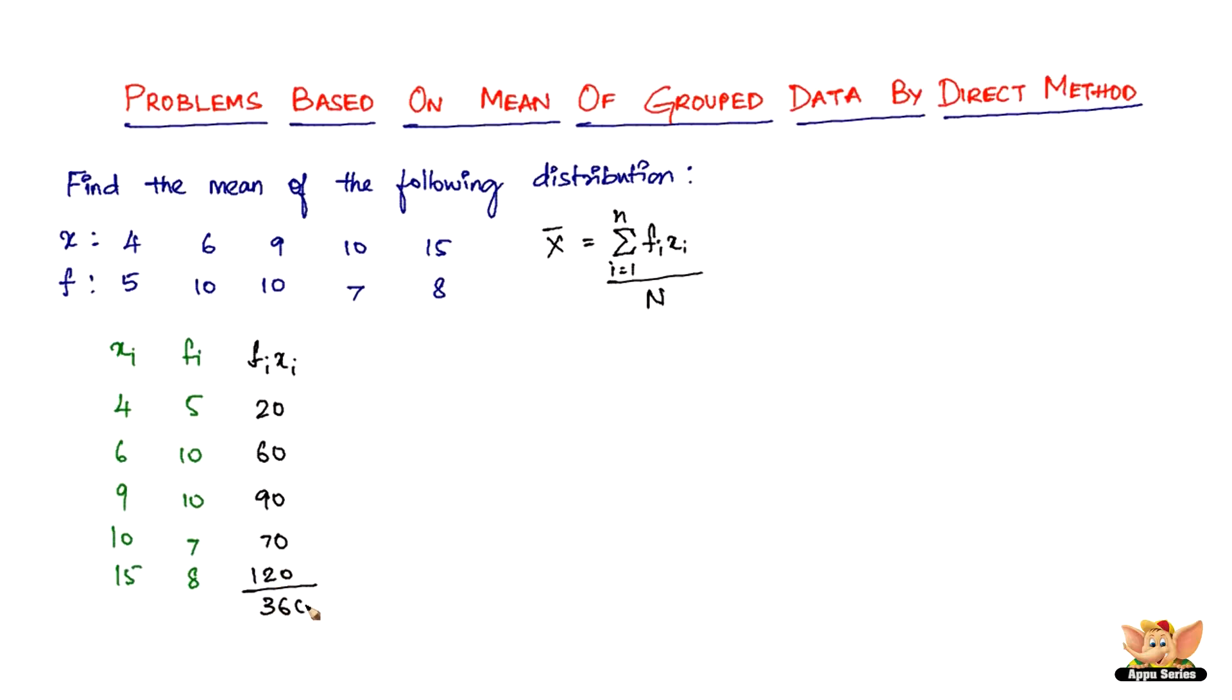So summation of f_i times x_i is 360. We also need capital N, which is the sum of the frequencies. 5 plus 10 is 15, plus 10 is 25, plus 7 is 32, plus 8 is 40. So N equals 40.